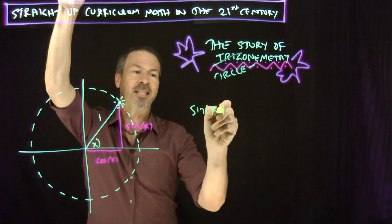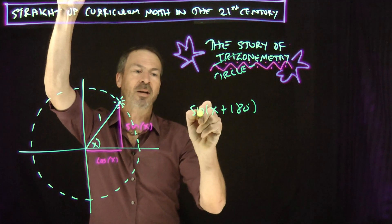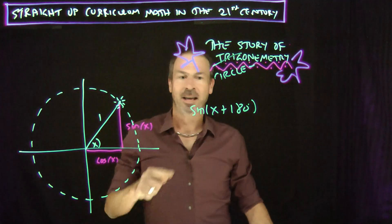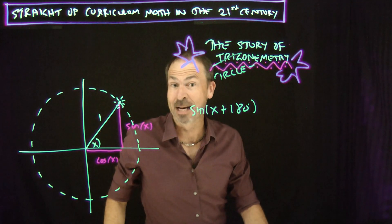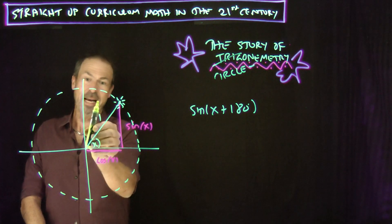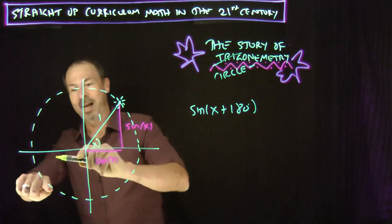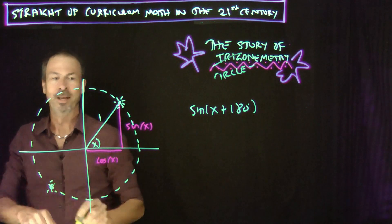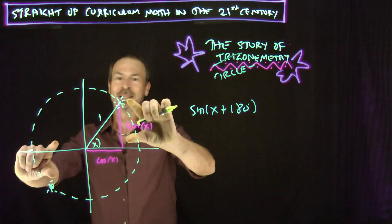For example, what's sine of X plus 180 degrees? What's the height of the Sun at an angle X plus an extra 180? Well, let's figure it out. Here's the height of the Sun at angle X. If I go an extra 180, it'd be directly opposite. The Sun would be down here.